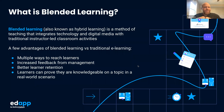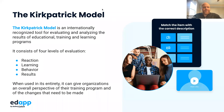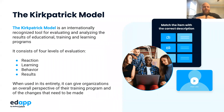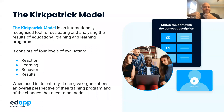So how do we know if that's working? The Kirkpatrick model is an L&D framework to test and evaluate the effectiveness of training itself. There are four levels of evaluation: reaction, learning, behavior, and results.